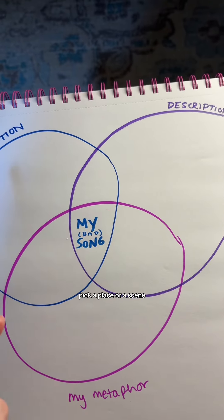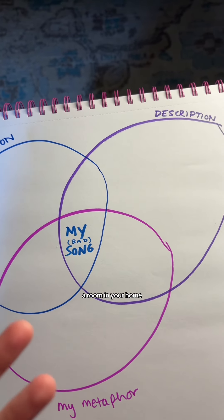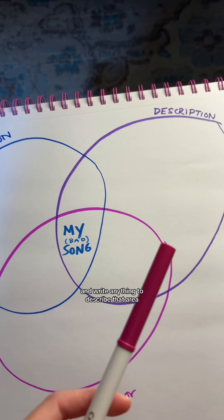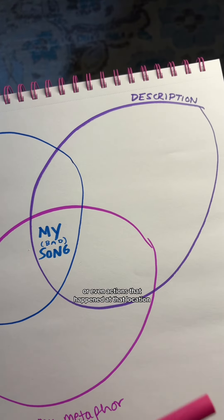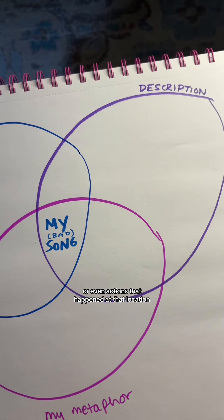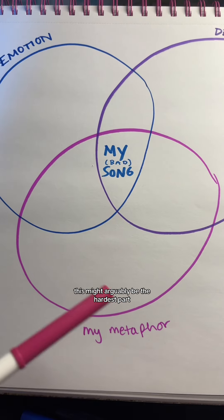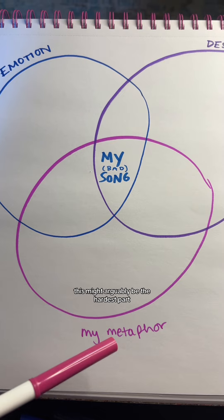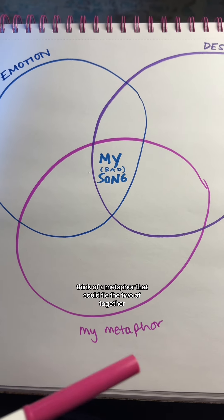In the description box, pick a place, a scene, or a room in your home and write anything to describe that area, or even actions that happened at that location. Now this might arguably be the hardest part — but also the most fun part.